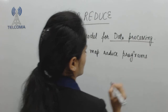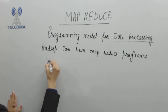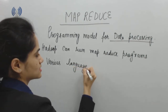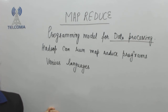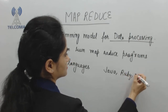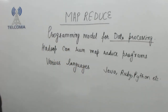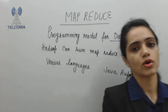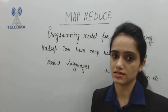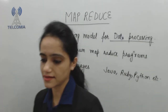Hadoop can run MapReduce programs written in various languages. It supports Java, Ruby, Python, and others. MapReduce is a programming model we can use for queries, for data processing, and for analyzing data faster. MapReduce programs are inherently parallel.